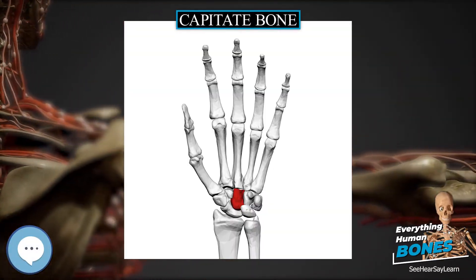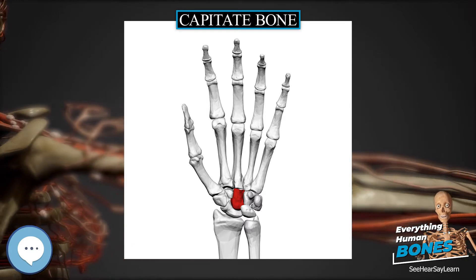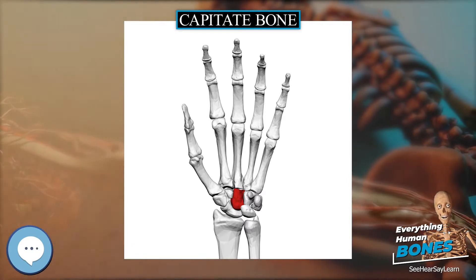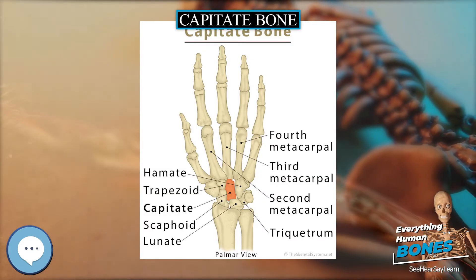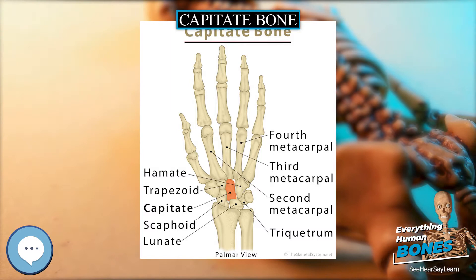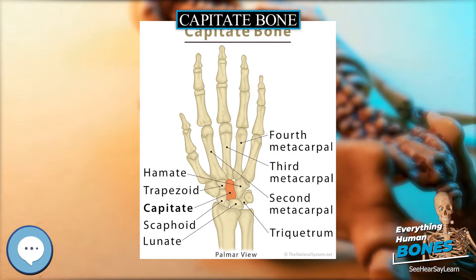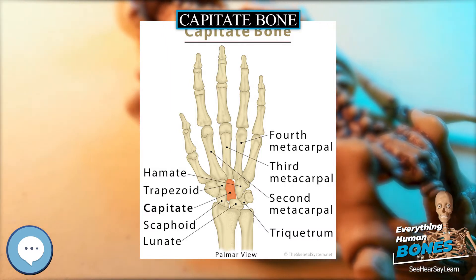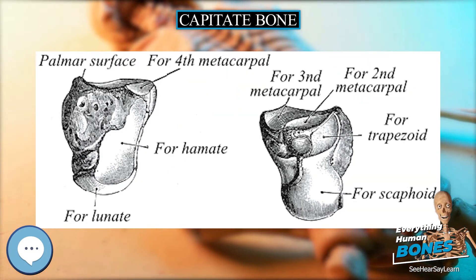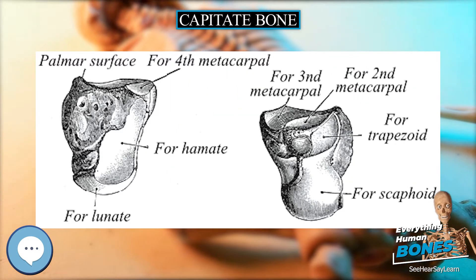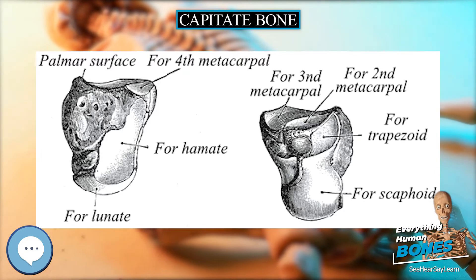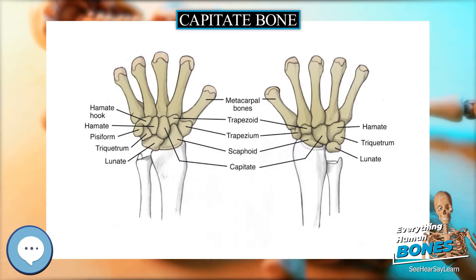The capitate bone is found in the center of the carpal bone region, colloquially known as the wrist, which is at the distal end of the radius and ulna bones. It articulates with the third metacarpal bone, the middle finger, and forms the third carpometacarpal joint.